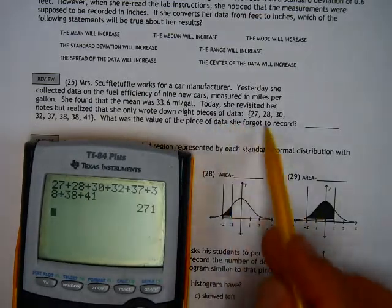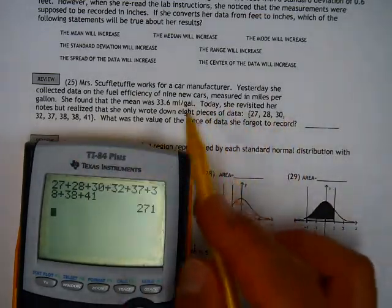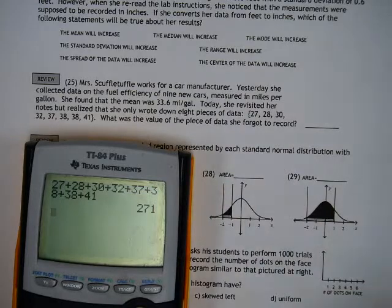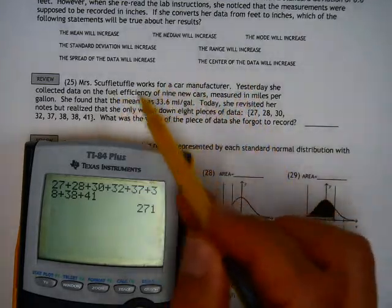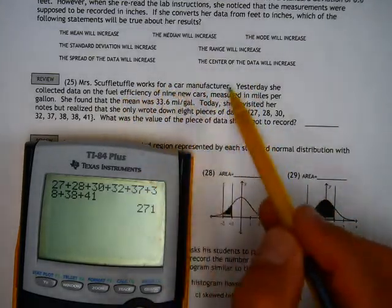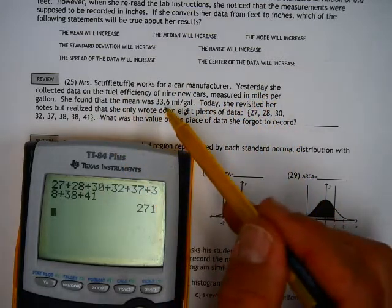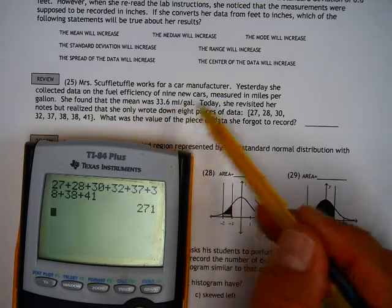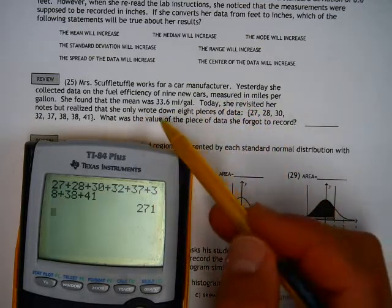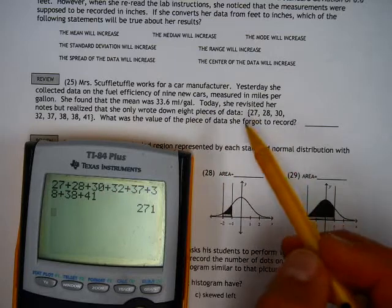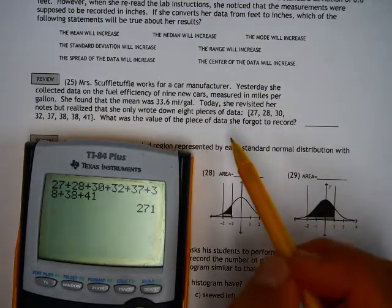To save time, I went ahead and added those together. We're looking at Mrs. Scuffletufle working for a car manufacturer. She collected data on efficiency measured in miles per gallon. She found the mean was 33.6, and today she revisited her notes but realized she wrote down only eight pieces of data. She forgot one piece of data.